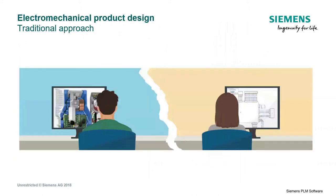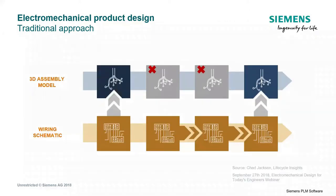Let's look at electromechanical product design. In the traditional approach, the mechanical design team and the electrical design team are normally quite separate, as shown in this picture with mechanical on the left and electrical on the right. This separation can cause problems. Changes in the schematic or design require rounds of exports and imports, reviews need to be made, and this can lead to unintended behaviors, delays, or issues along the way.